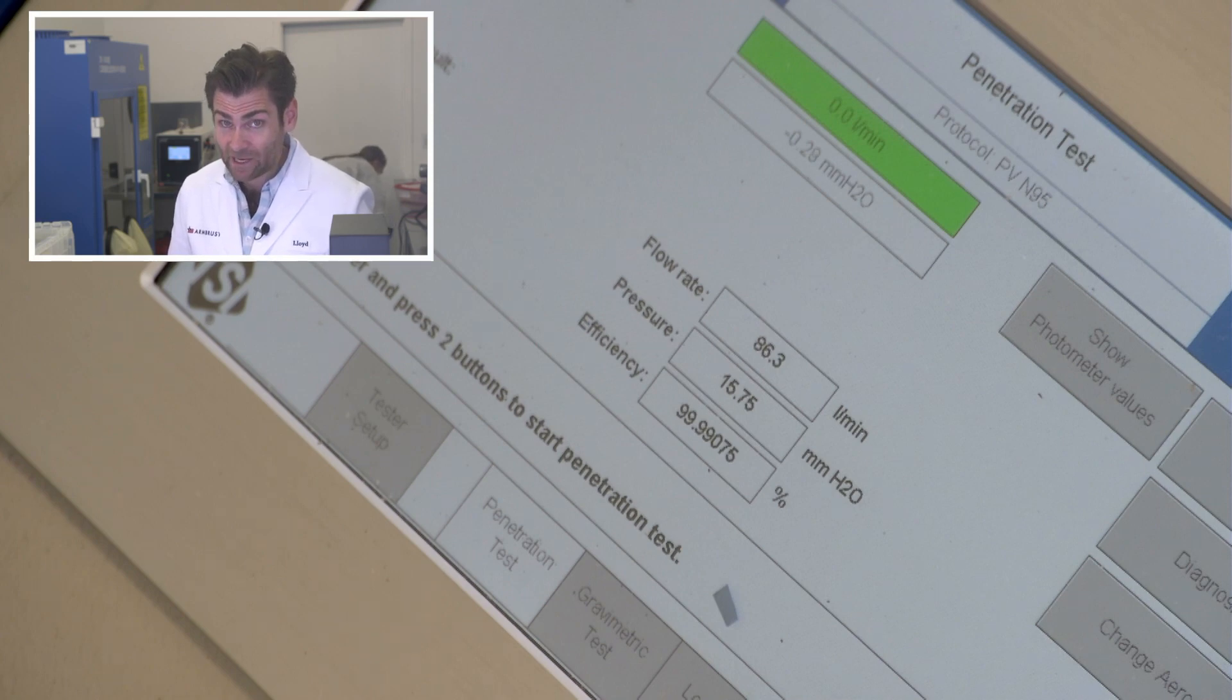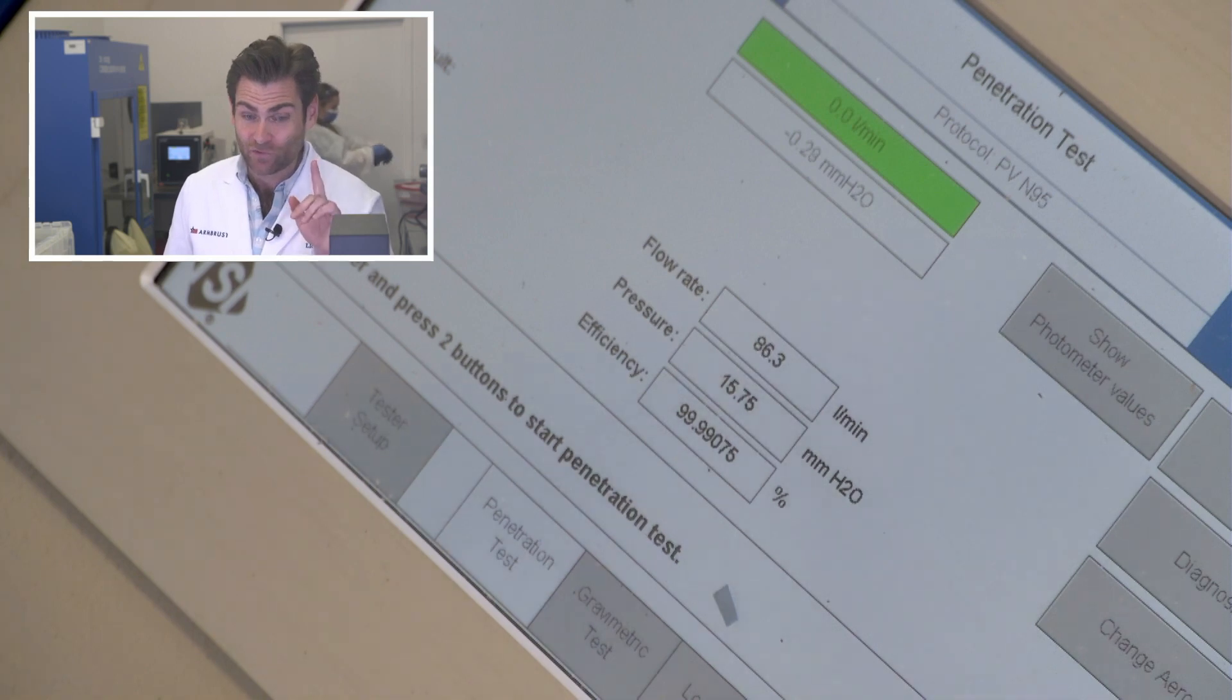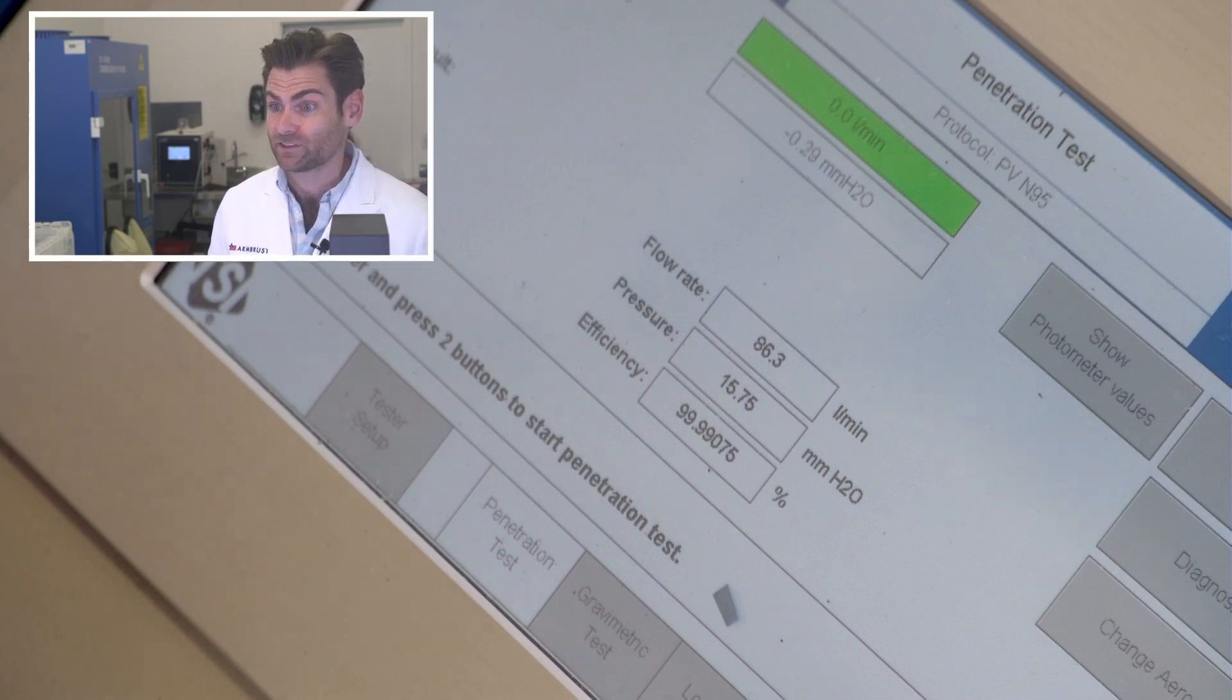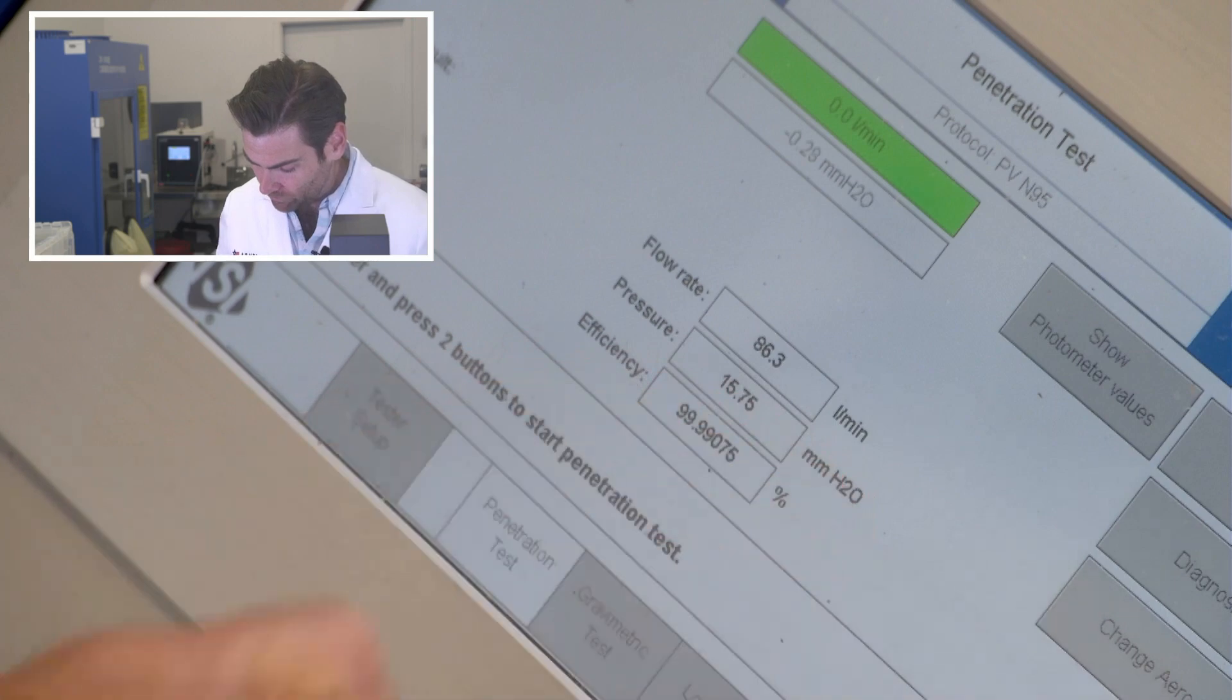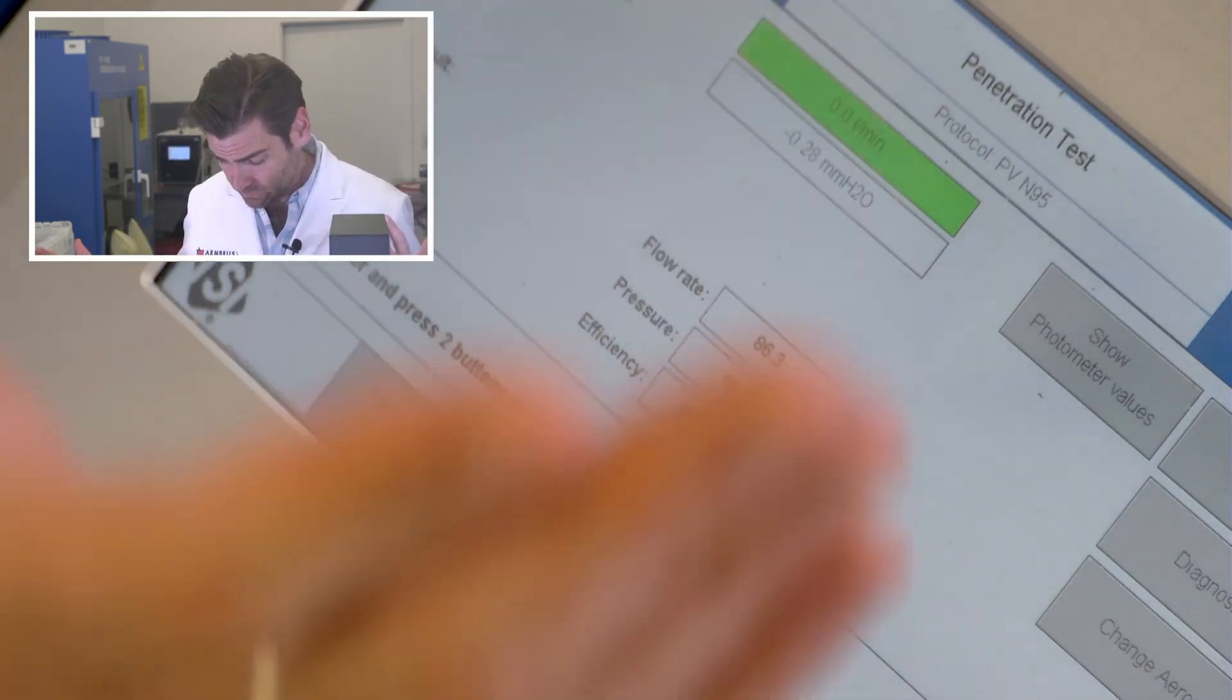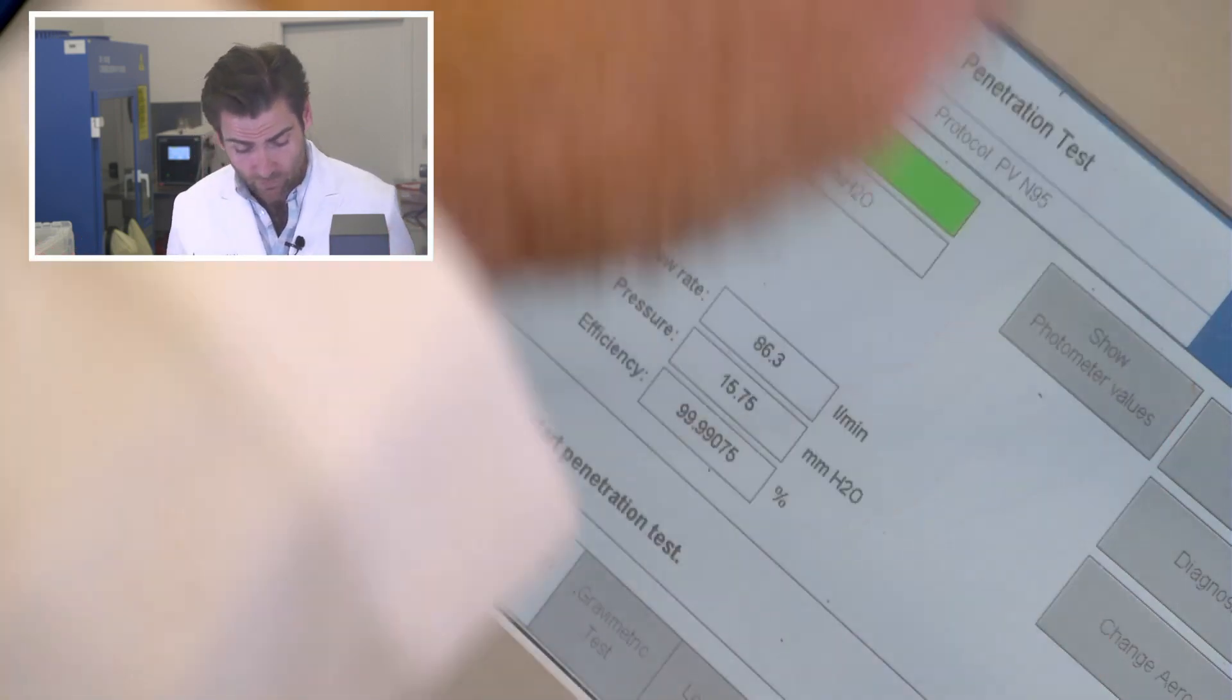Wow, 99.99 percent! That's a record for today. That's great. That's what you get with the FFP3—get that extra 0.9 percent. We got a pressure drop of 157 millimeters of H2O, which, you know, it's great. That's well within the N95 spec. So great mask, the 3M Aura 9330 Plus, made in the UK.